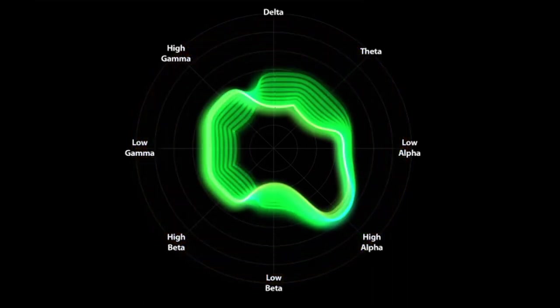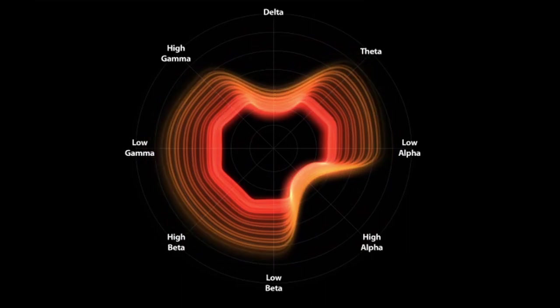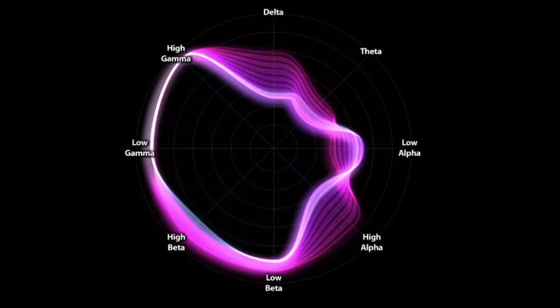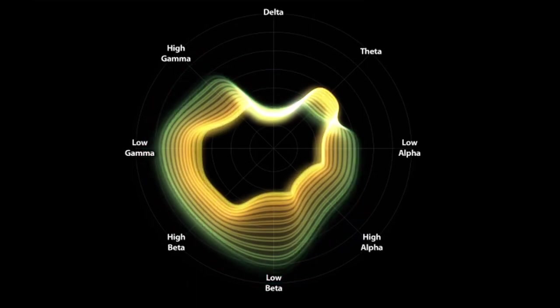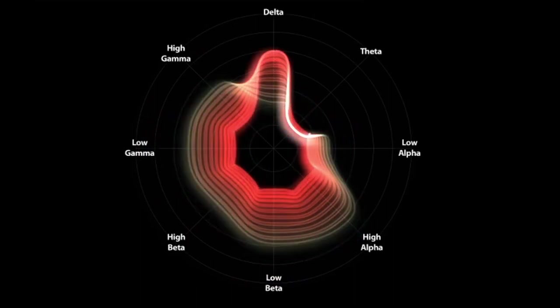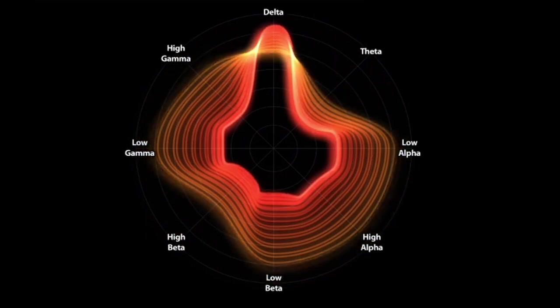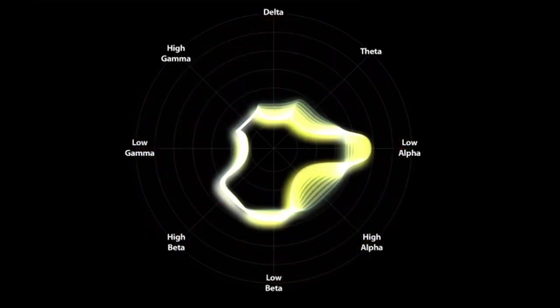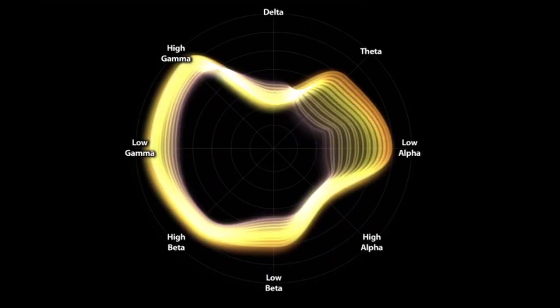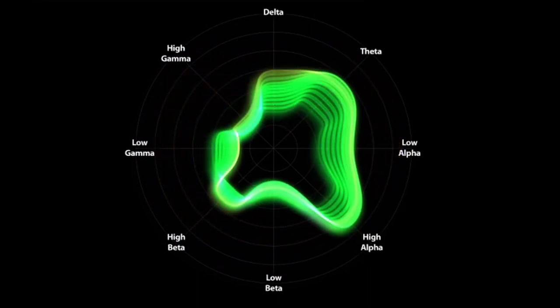I'm on Wikipedia and I looked up brain waves. It brought me to the neural oscillation page. It says neural oscillations or brain waves are rhythmic or repetitive patterns of neural activity in the central nervous system. In individual neurons, oscillations can appear either as oscillations in membrane potential or as rhythmic patterns of action potentials, which then produce oscillatory activation of postsynaptic neurons.